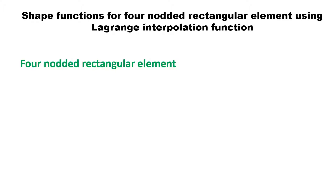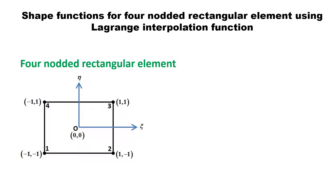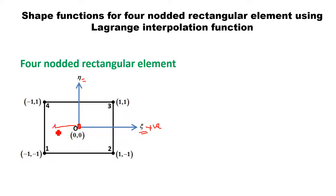The very first example for 2D is the four-noded rectangular element. If you consider one rectangular element in the natural coordinate system, the origin is assumed at the center of the element. The horizontal coordinate is represented by XI and the vertical coordinate is represented by eta. XI is positive towards the right and negative towards the left. Similarly, eta is positive upward and negative downward.